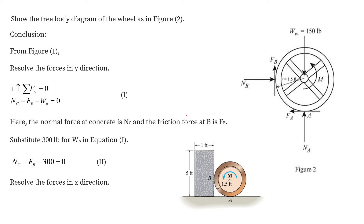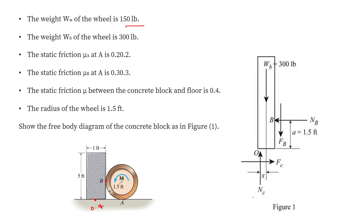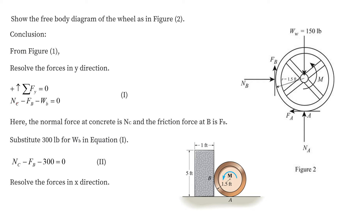From here we can write equation 1. On the concrete, the normal reaction at point C balances the weight of the concrete and the friction force Fb. Taking the summation of all forces along the vertical direction equal to zero, considering upward as positive and downward as negative, we write: Nc − Fb − Wb = 0. We will name this equation 1.